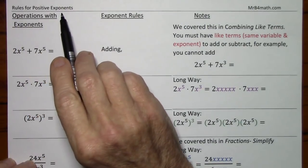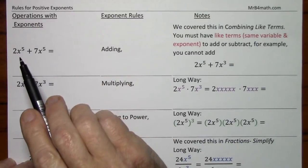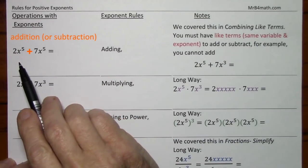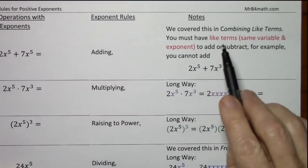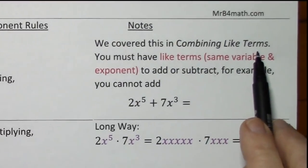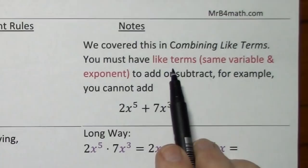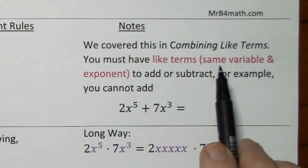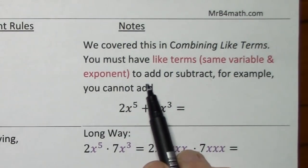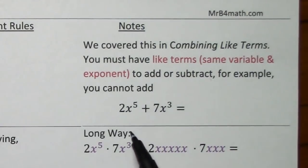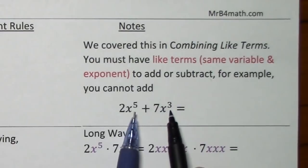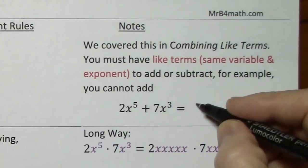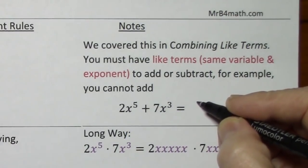In following the rules for positive exponents, you have to note the operation. In this first case, this topic was covered in the video combining like terms. You must have like terms, that is the same variable and exponent, in order to add or subtract. For example, these are not like terms. You have the same variable but different exponents, so all you could do is repeat what you have.